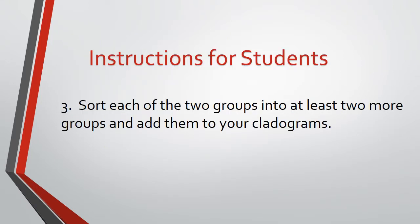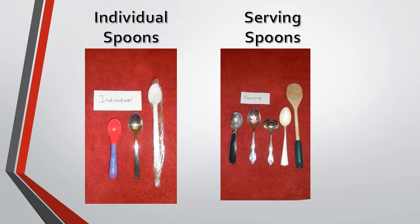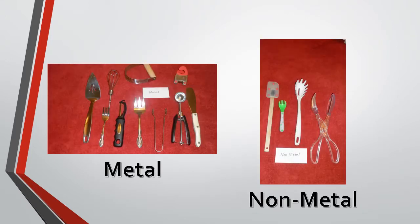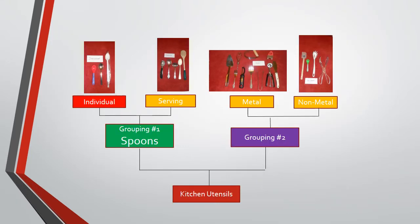Instruct your students to sort each group into at least two more groups and add the new groups to their cladograms. The spoons could be divided into two groups this way — spoons for individual use and serving spoons — which could be placed on the cladogram like this. If the non-spoon group was sorted into two more groups based on whether they contain any metal or not, they could be placed on the cladogram like this.